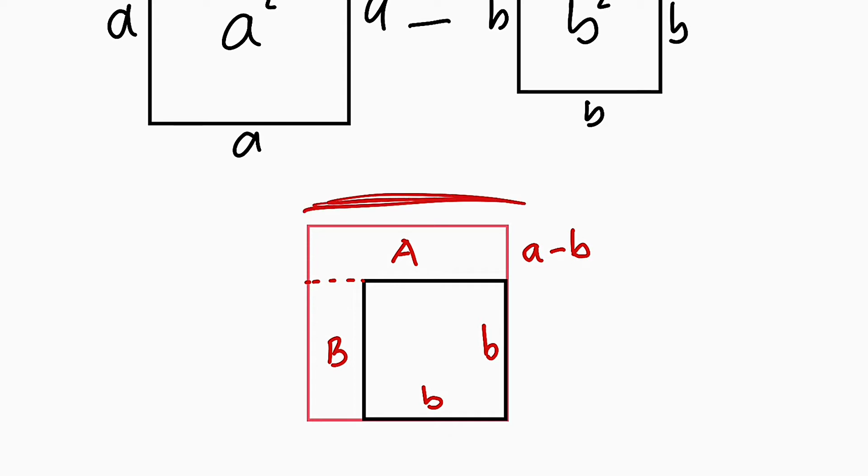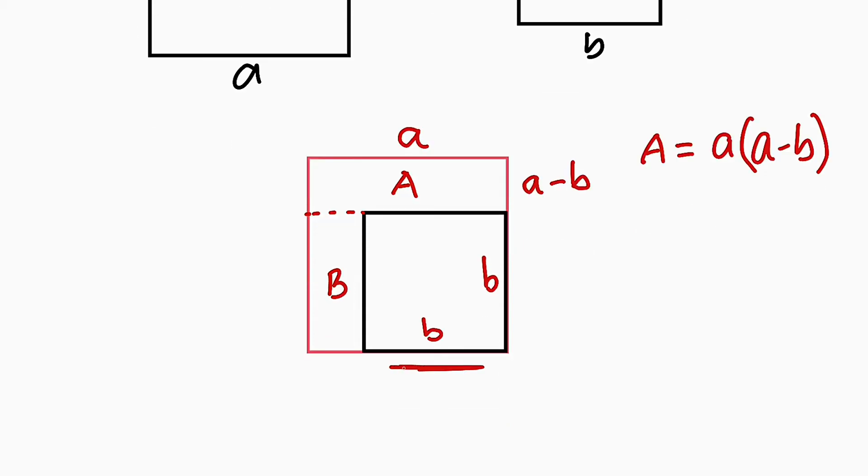We have a here, therefore the area for A will be a multiplied by a minus b. Then let us go to area B. This is already b. The region here will be a minus b because the total length here is a.